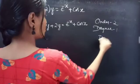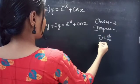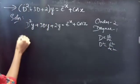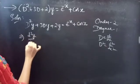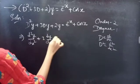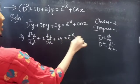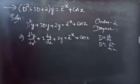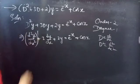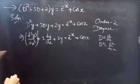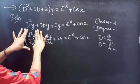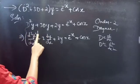We know that differential operator D is the derivative and D² is d²/dx². We can write the given equation as d²y/dx² + 3(dy/dx) + 2y = e^(−x) + cos x. Here we have the highest derivative d²y/dx², so 2 will be the order and the highest power of the highest derivative is 1, which is the degree.